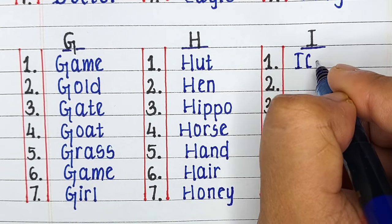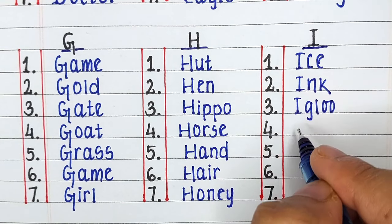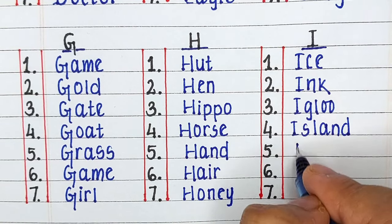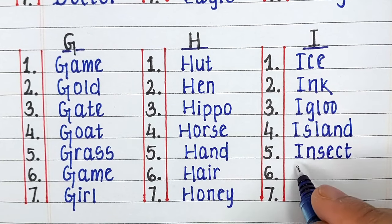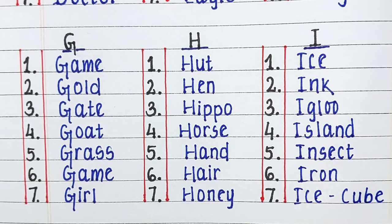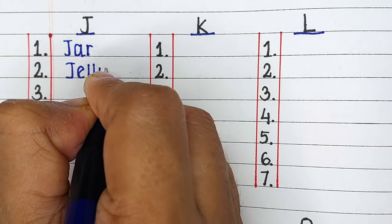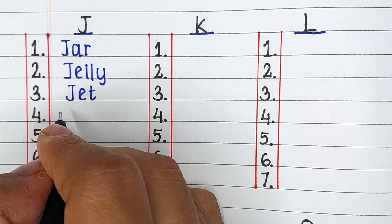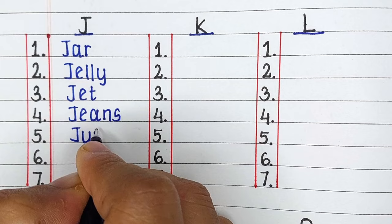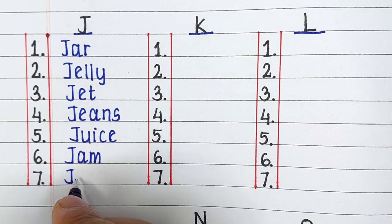Next up we have Alphabet I. The words starting from letter I are Ice, Ink, Igloo, Island, Insect, Iron and Ice Cube. Next up we have Alphabet J. The words starting from letter J are Jar, Jelly, Jet, Jeans, Juice, Jam and Jackal.